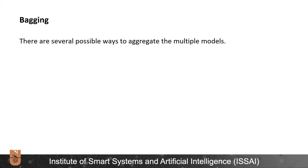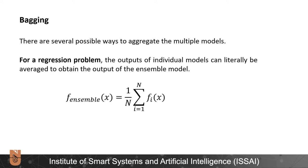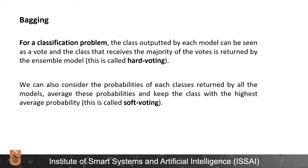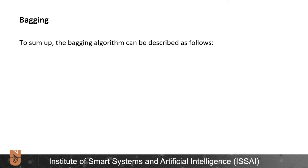There are several possible ways to aggregate the multiple models. For a regression problem, the outputs of individual models can be averaged to obtain the output of the ensemble model. For a classification problem, the class outputted by each model can be seen as a vote, and the class that receives the majority of the votes is returned by the ensemble model – this is called hard voting. We can also consider the probabilities of each class returned by all the models, average these probabilities and keep the class with the highest average probability. This method is known as soft voting.